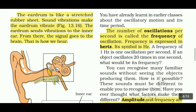What is vibration? To and fro motion of an object is called vibration. That vibration is what we call oscillatory motion.